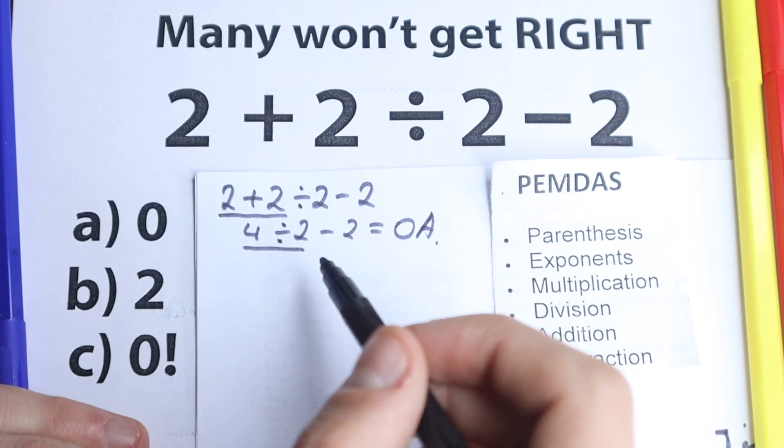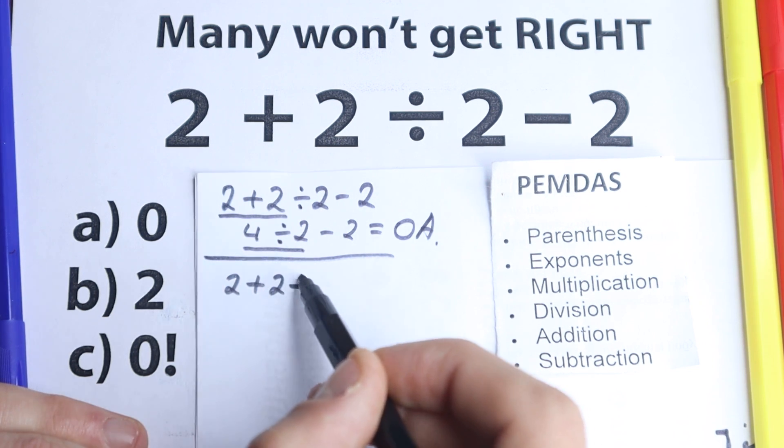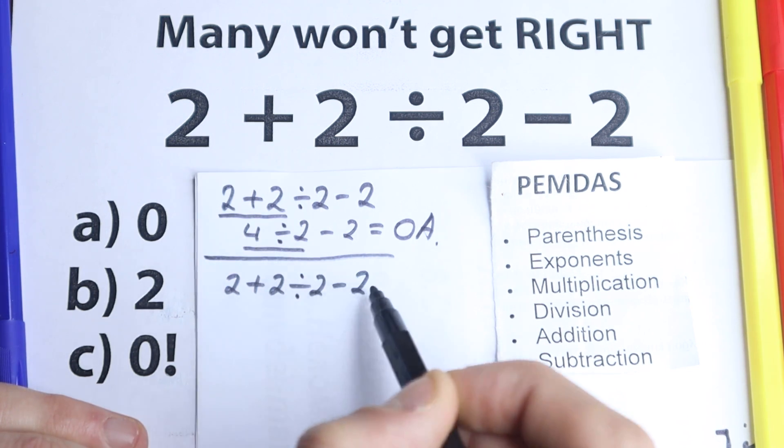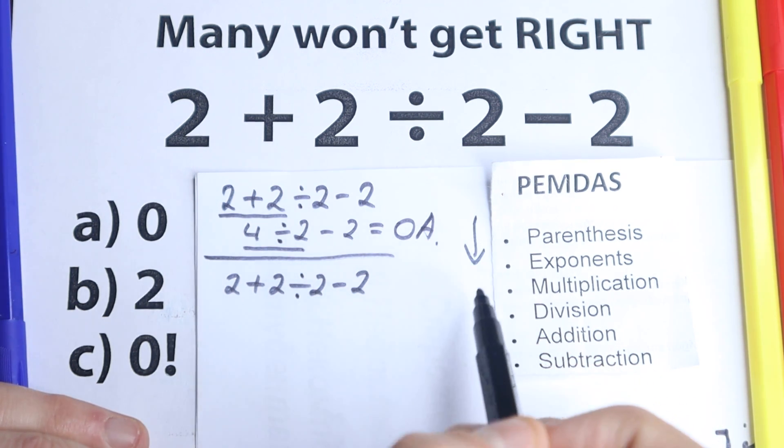Maybe it will be the same, I don't know. So here is our question. I just rewrite it. We have 2 plus 2 divided by 2 and minus 2. And let's solve this according to PEMDAS. This PEMDAS works from the top to the bottom.